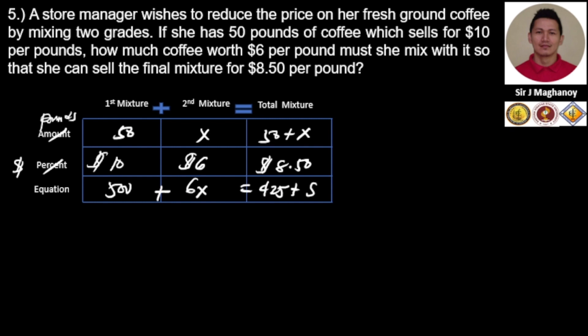So we have the equation: 500 plus 6x equals 425 plus 8.50x. Now we can determine the value of x using the shift solve method. The answer is x equals 30 pounds.